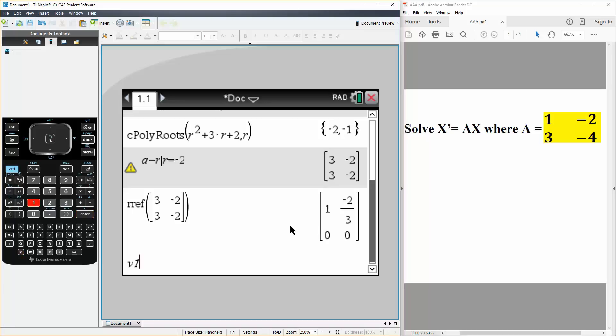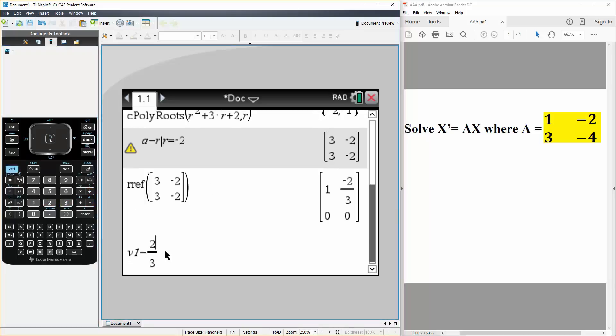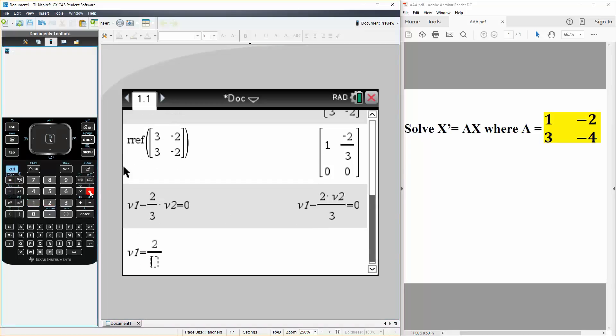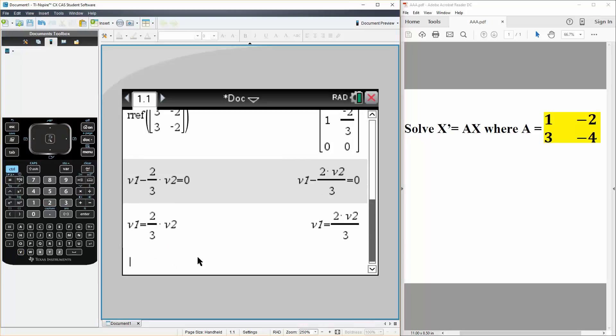And this is what we get, so that means V1 minus 2 thirds V2 is equal to 0, and also this would mean that V1 is equal to 2 divided by 3, V2, just rearranging. And so the eigenvector for this will therefore be,